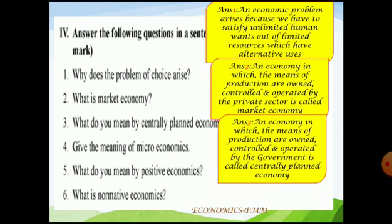Third: what do you mean by centrally planned economy? An economy in which the means of production are owned, controlled and operated by the government is called centrally planned economy, also known as a socialistic pattern of economy. Examples include China, Vietnam, and North Korea. Market economy examples are USA, UK, Japan, Australia, and most European countries.